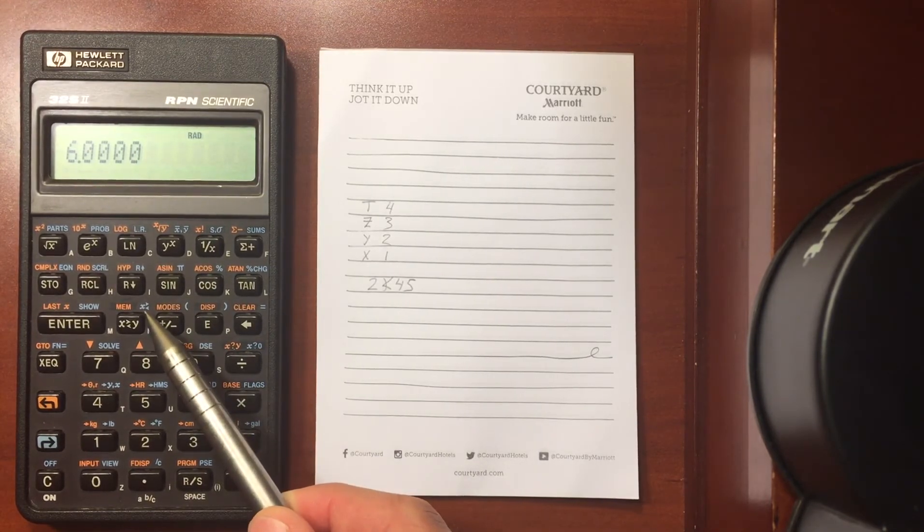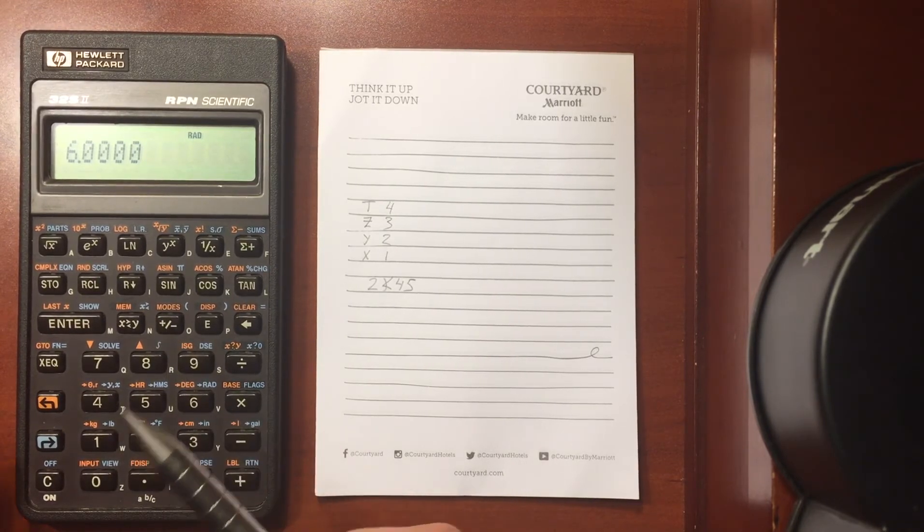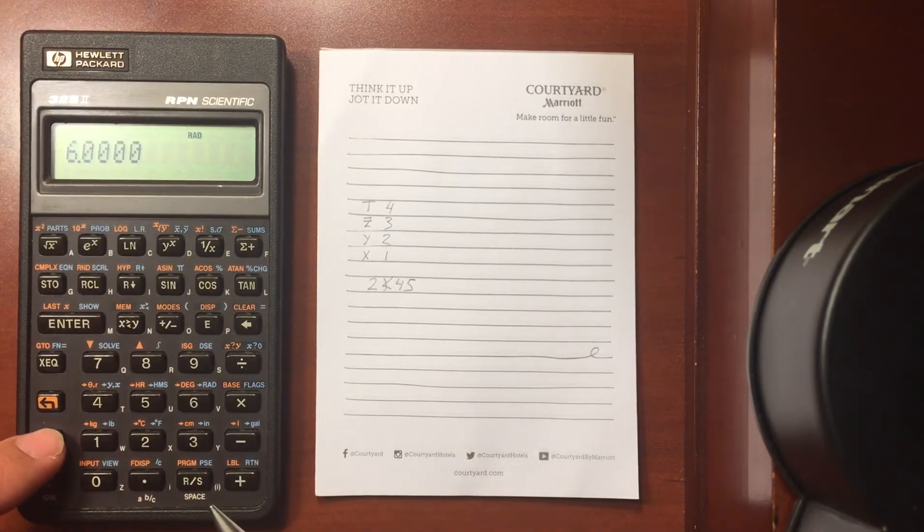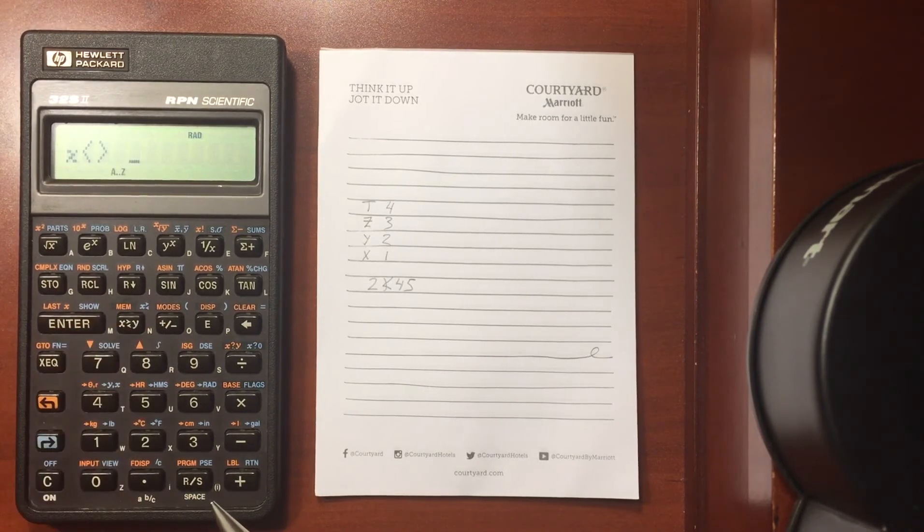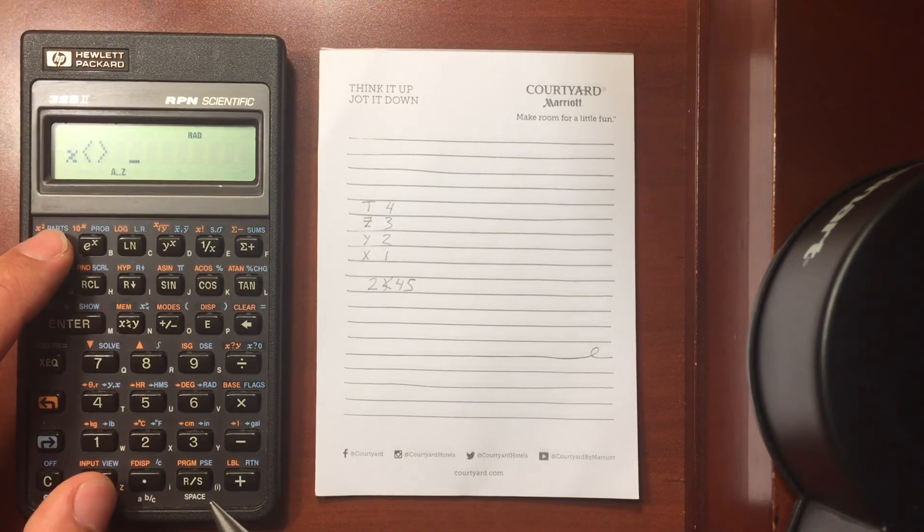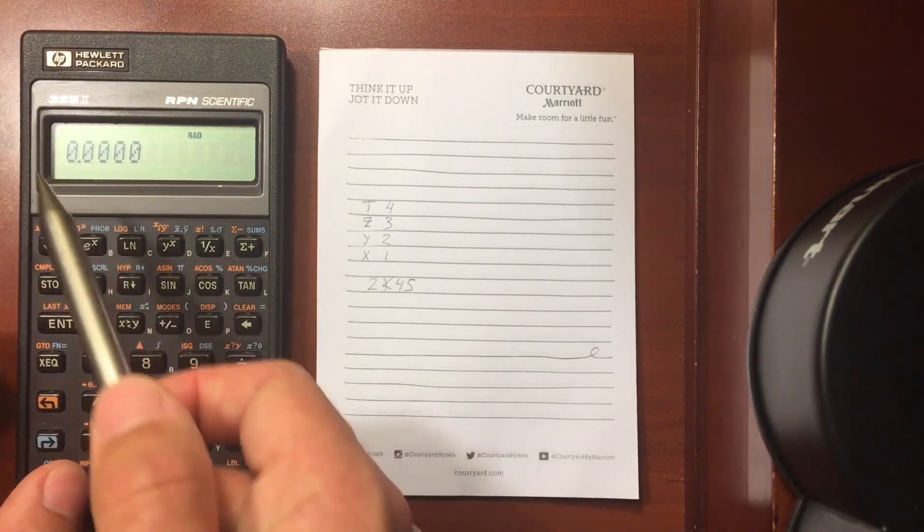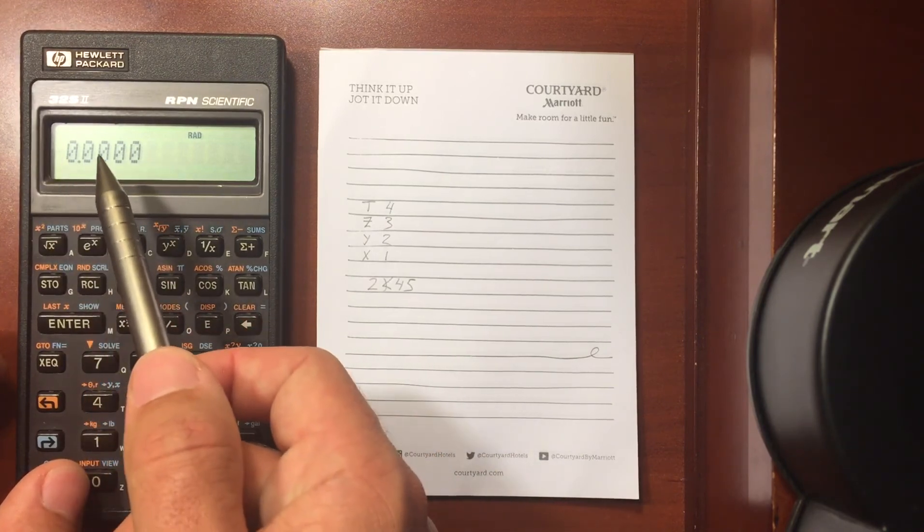One other thing here, you can swap in and out of the X register to memory. So if I wanted to store that 6, I can store that 6 or swap with what's ever in my A register. Now I don't have anything in my A register, so it'll take the 0 that's in there and put it into the X register.